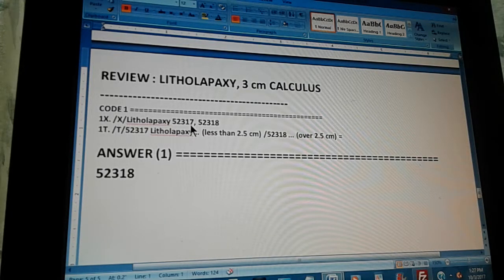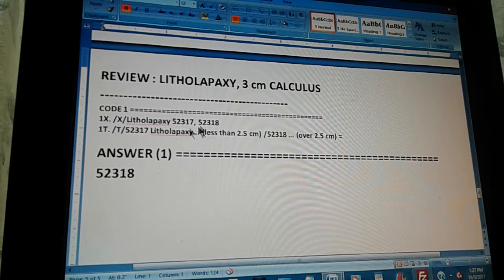The index is alphabetically. So, you're going to find it, and you're going to find two codes there. What are the two codes? 52317 and 52318. Now, one of these two codes is the answer. Which one? For that, you have to go to the tabular.